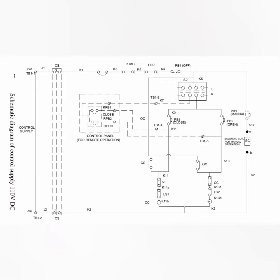Next, coming to the main control supply DC circuits. The control supply DC switch MCB CS should be turned on to give DC supply to the control circuits. Then the KMC fuse interlocks, mechanical interlocks, and OLR relay contacts are in series with the positive supply, so these must be satisfied before the circuit can proceed. Then comes the PB4 push button position, which is a future interlock or breaker interlock — this portion is currently off.